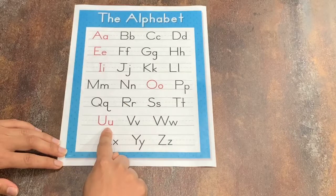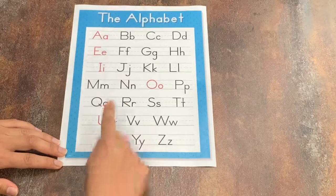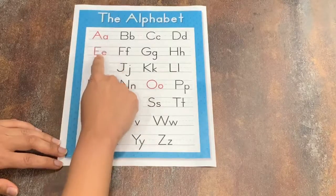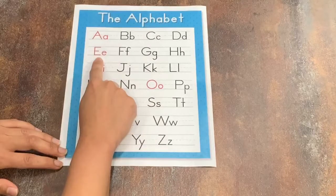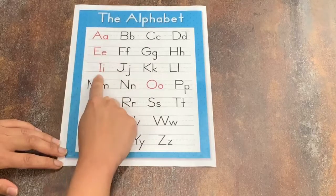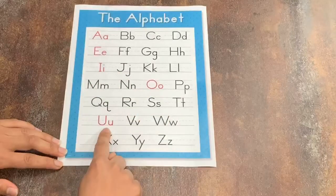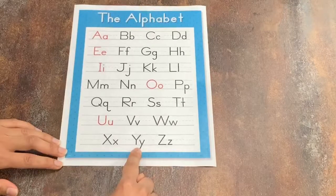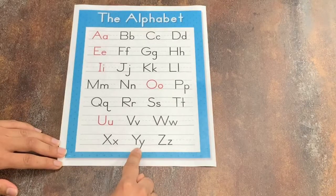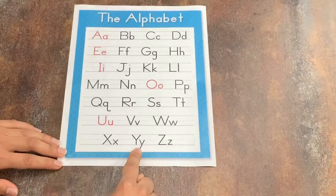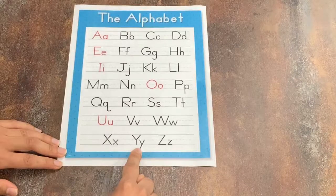The vowels are A, E, I, O, U. La letra Y es especial porque es una vocal y una consonante. The letter Y is special because it is a vowel and a consonant.